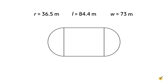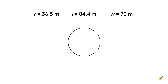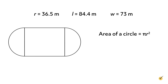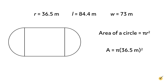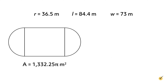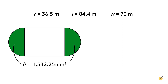Now we have all of the information we need to find our total area. Before we begin calculating, let's take another look at our stadium. Notice that there are two semicircles. If we removed the rectangle between them and pushed them together, we'd have a complete circle. So to find the area of both semicircle ends at once, we can just use the formula for the area of a whole circle. The area of a circle is equal to pi r squared. So our area, with a radius of 36.5 meters, is equal to pi times 36.5 meters squared. When we multiply this out, we get 1,332.25 pi square meters. The area of our two semicircles together is 1,332.25 pi meters squared.